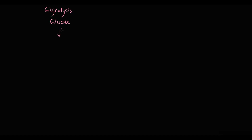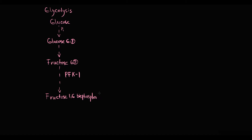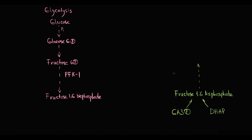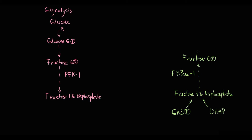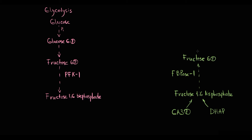Recall that in glycolysis, glucose initially is phosphorylated to glucose-6-phosphate, and glucose is converted to fructose-6-phosphate, which by enzyme phosphofructokinase-1, PFK1, is converted into fructose-1,6-bisphosphate. In gluconeogenesis, glyceraldehyde-3-phosphate and dihydroxyacetone phosphate produce fructose-1,6-bisphosphate, and then enzyme fructose bisphosphatase-1, FBPase1, cleaves this phosphate group and fructose-6-phosphate is released. Then fructose-6-phosphate is converted into glucose-6-phosphate and the phosphate group is cleaved, forming glucose.